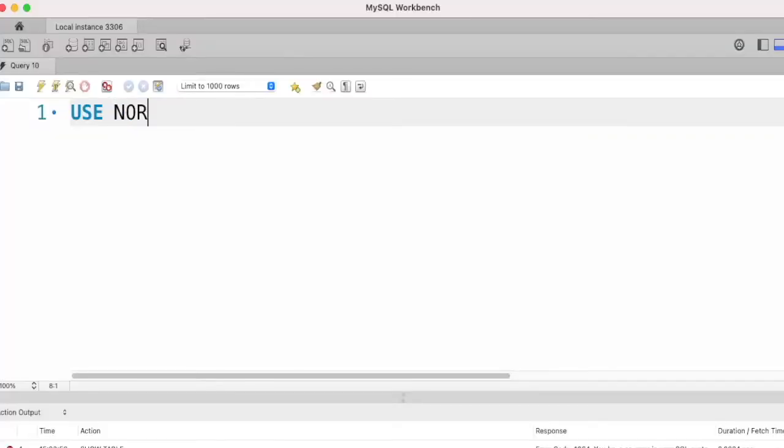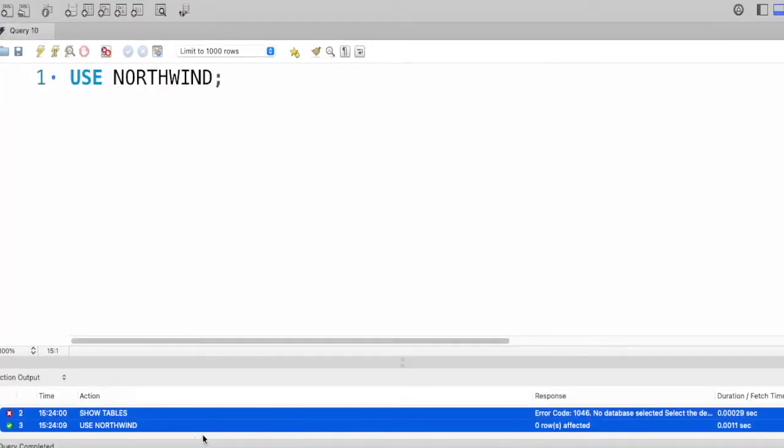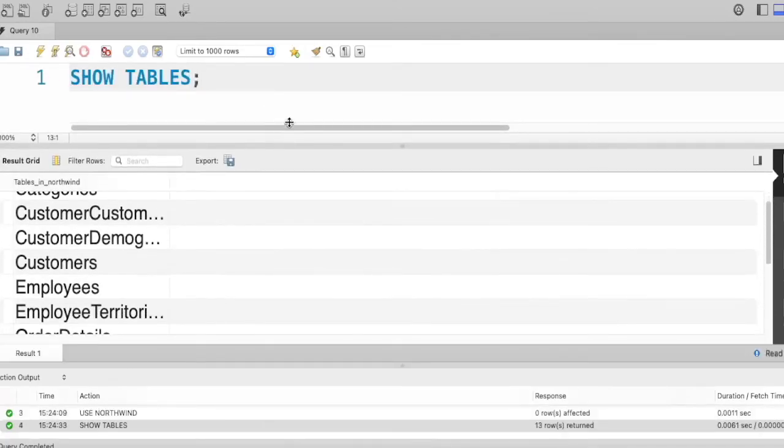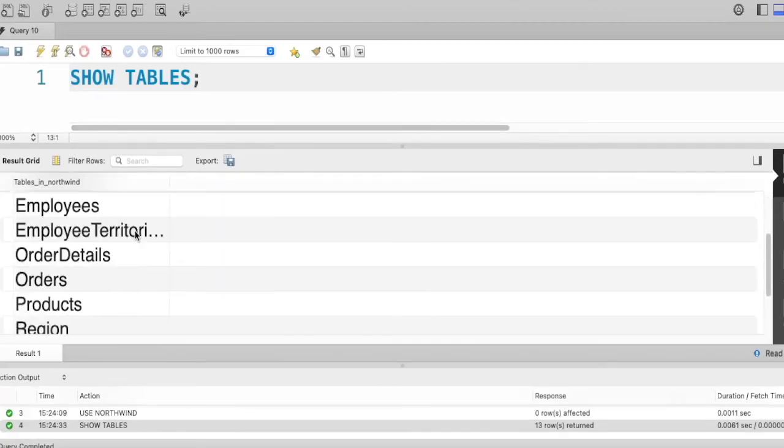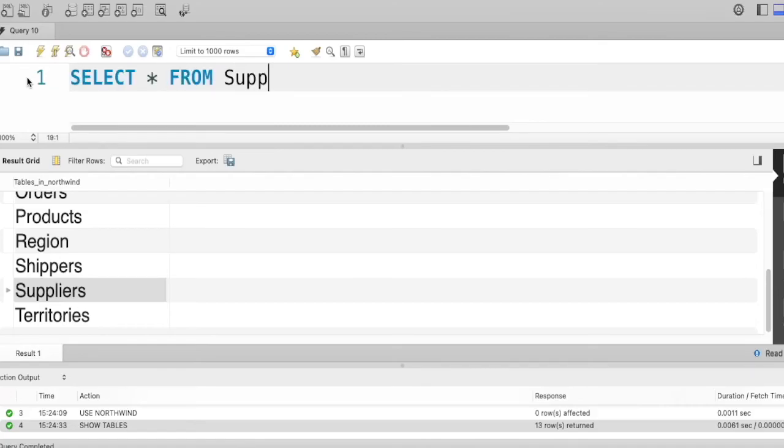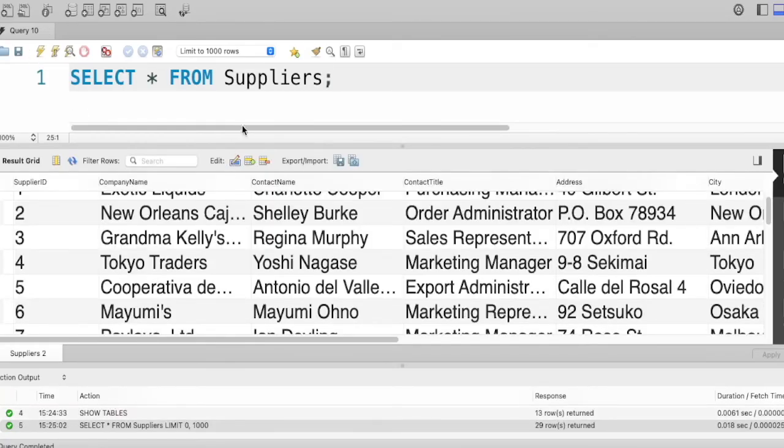Let's demonstrate this. Use Northwind. Northwind is selected now. Let's show tables. We have different tables in this place. Assume we are interested in suppliers. I want to select all the columns from the suppliers. You see? All the columns are selected.